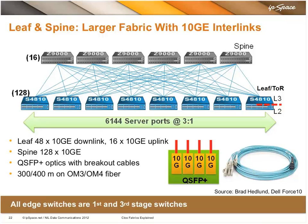The leaf switch still has QSFP optics used for the uplink — still basically a 40 gig optic. As you can see next to the cable there, a QSFP optic is basically four parallel lanes of 10 gig. Previously, we were taking those four parallel lanes and spraying packets across all four to make one electrical 40 gig pipe. In this case, we're going to tell the switch that the QSFP is actually four ports of 10 gig.